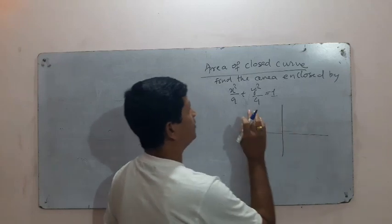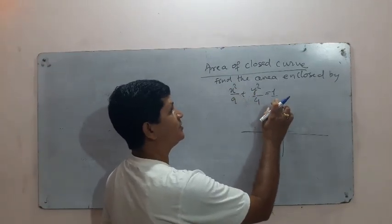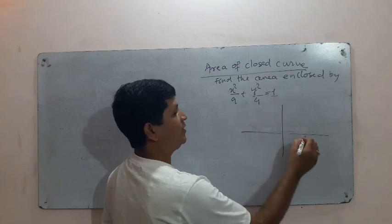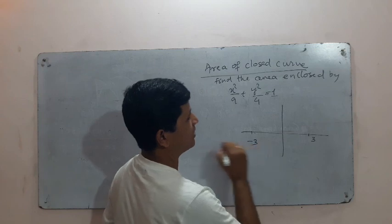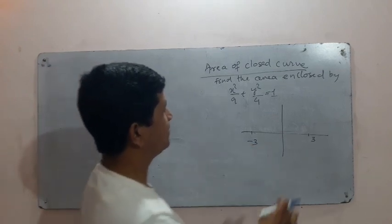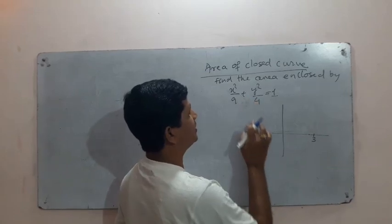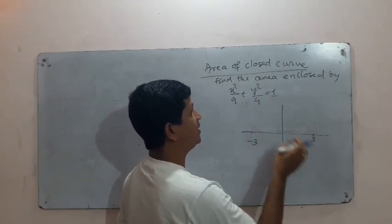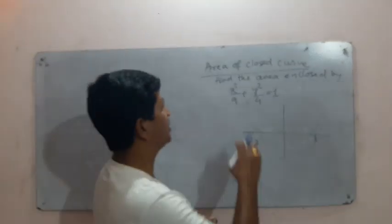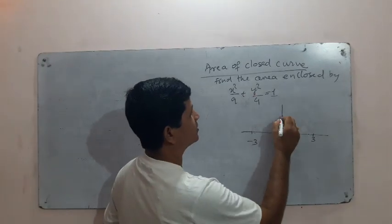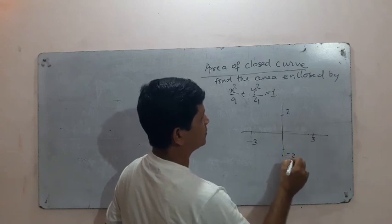If you put y equal to 0, then x²/9 = 1, so x² = 9, and x = ±3. This gives us points 3 and -3 on the x-axis. Similarly, if you put x equal to 0, you find the points on the y-axis: y = ±2, giving points 2 and -2.